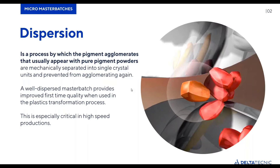A well-dispersed masterbatch provides improved first-time quality when used in the plastics transformation process — in this case, the cable production process — and this is especially crucial with high-speed production. It provides maximum color strength and maximum color performance, because the pigments are separated into single crystal units, each having maximum effect when incorporated into the base compound during the melting process.